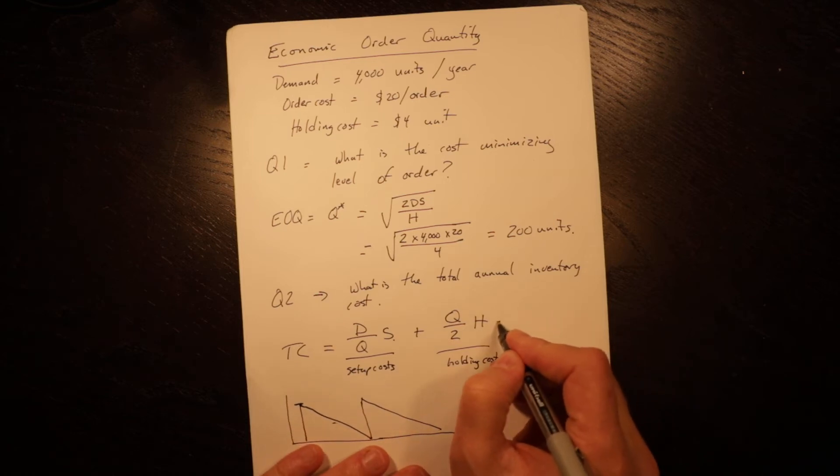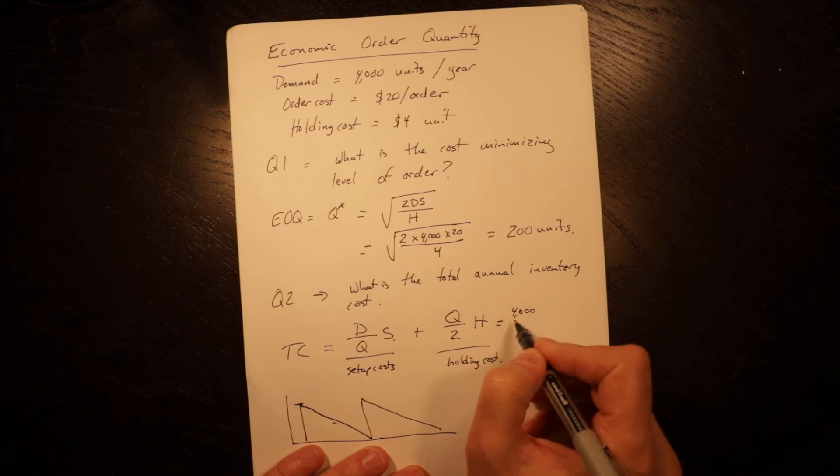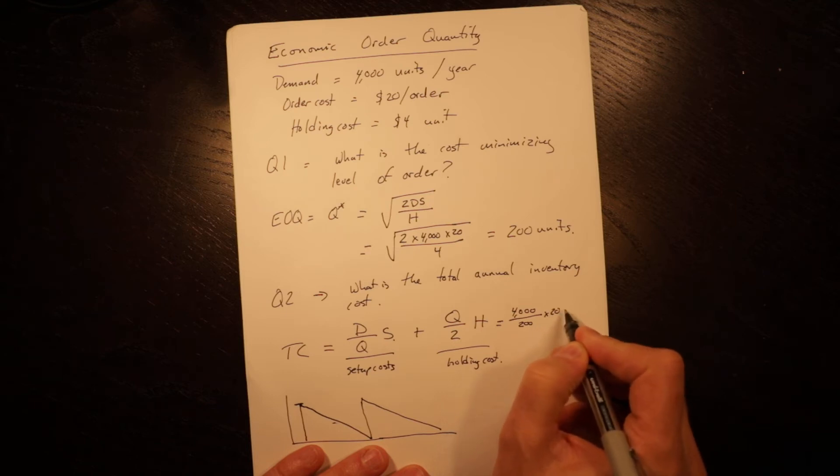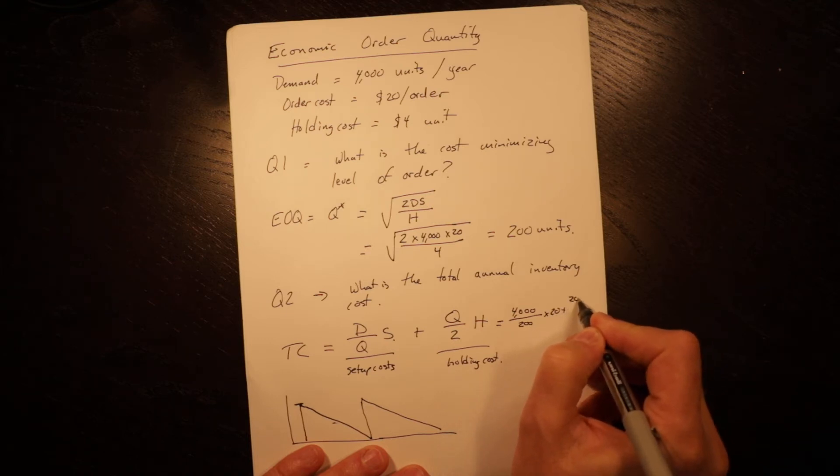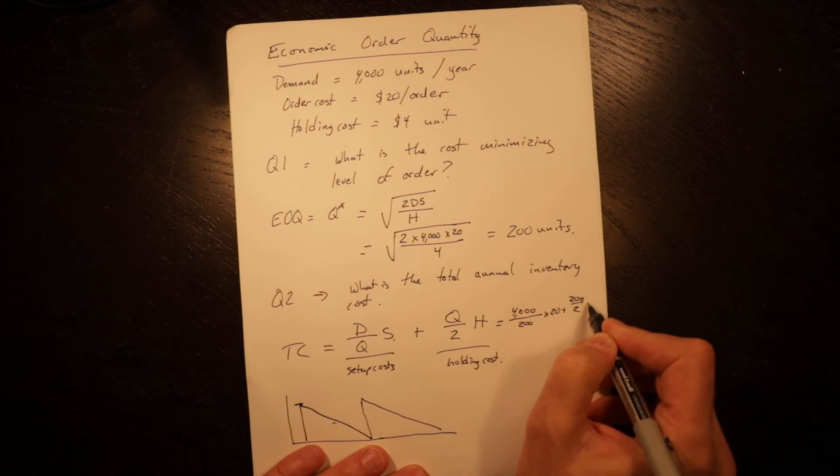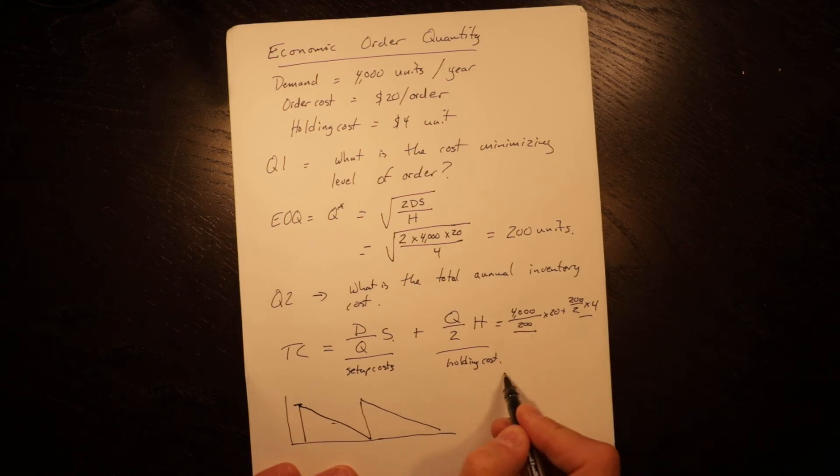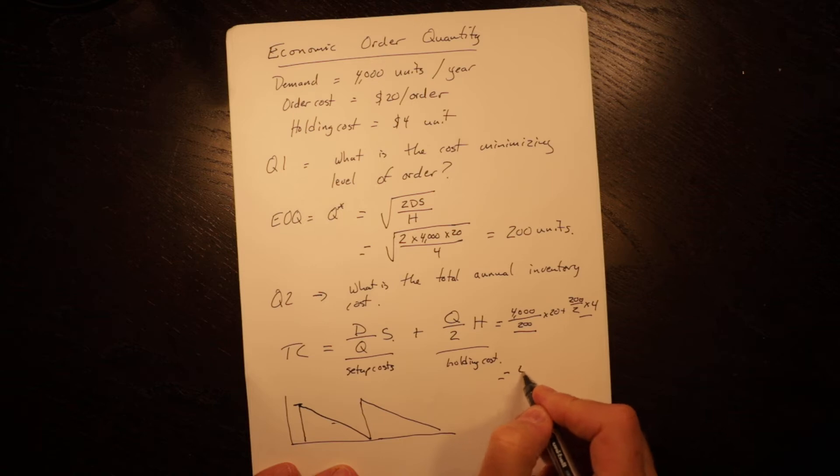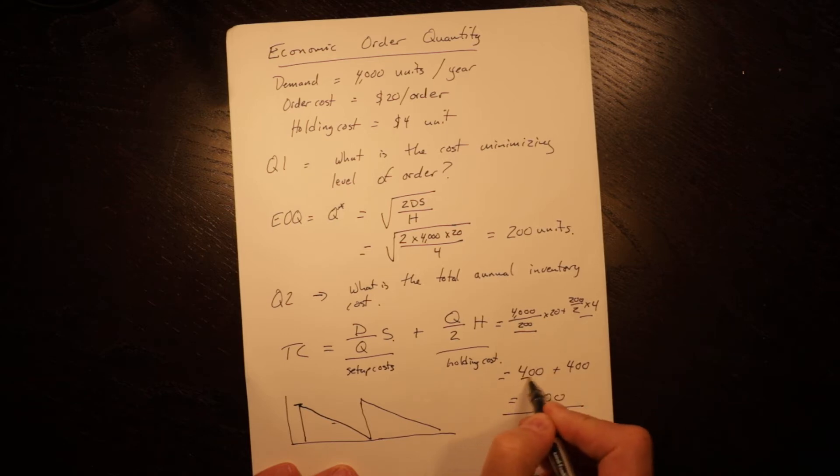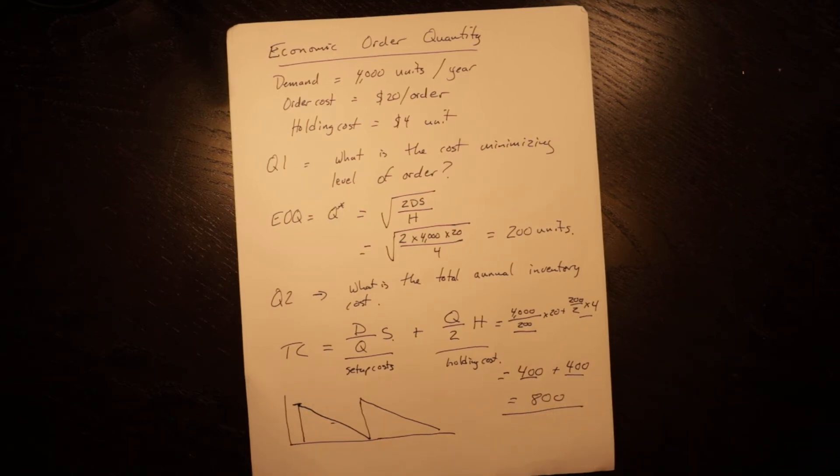In this case, it would be equal to 4,000 over 200 times 20 plus 200 divided by 2 times 4. Setup costs, holding costs equals 400 plus 400 equals 800 dollars. So we know that these two, by definition with the economic order quantity, are going to be the same. If you do them and they are not the same, then you've calculated your economic order quantity incorrectly.